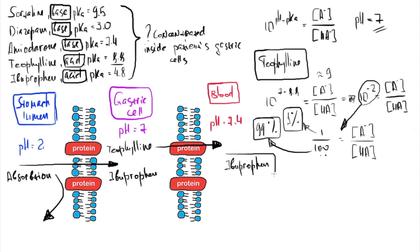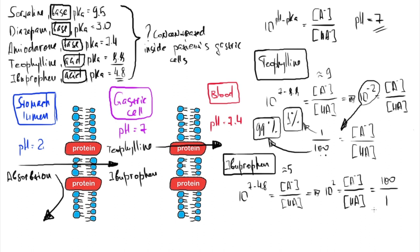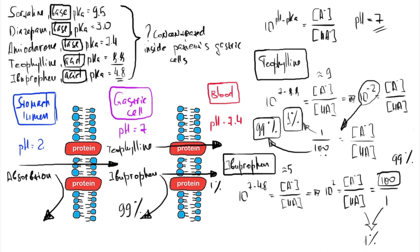For ibuprofen, with pKa 4.8 inside the gastric cell at pH 7: 10^(7 − 4.8) ≈ 10^(7 − 5) = 10^2 = 100/1. So only 1% of ibuprofen will be in lipid-soluble (uncharged) form, and 99% will be ionized or water-soluble inside the gastric cells — unable to exit to the blood. Therefore only ibuprofen will be concentrated inside the gastric cells.